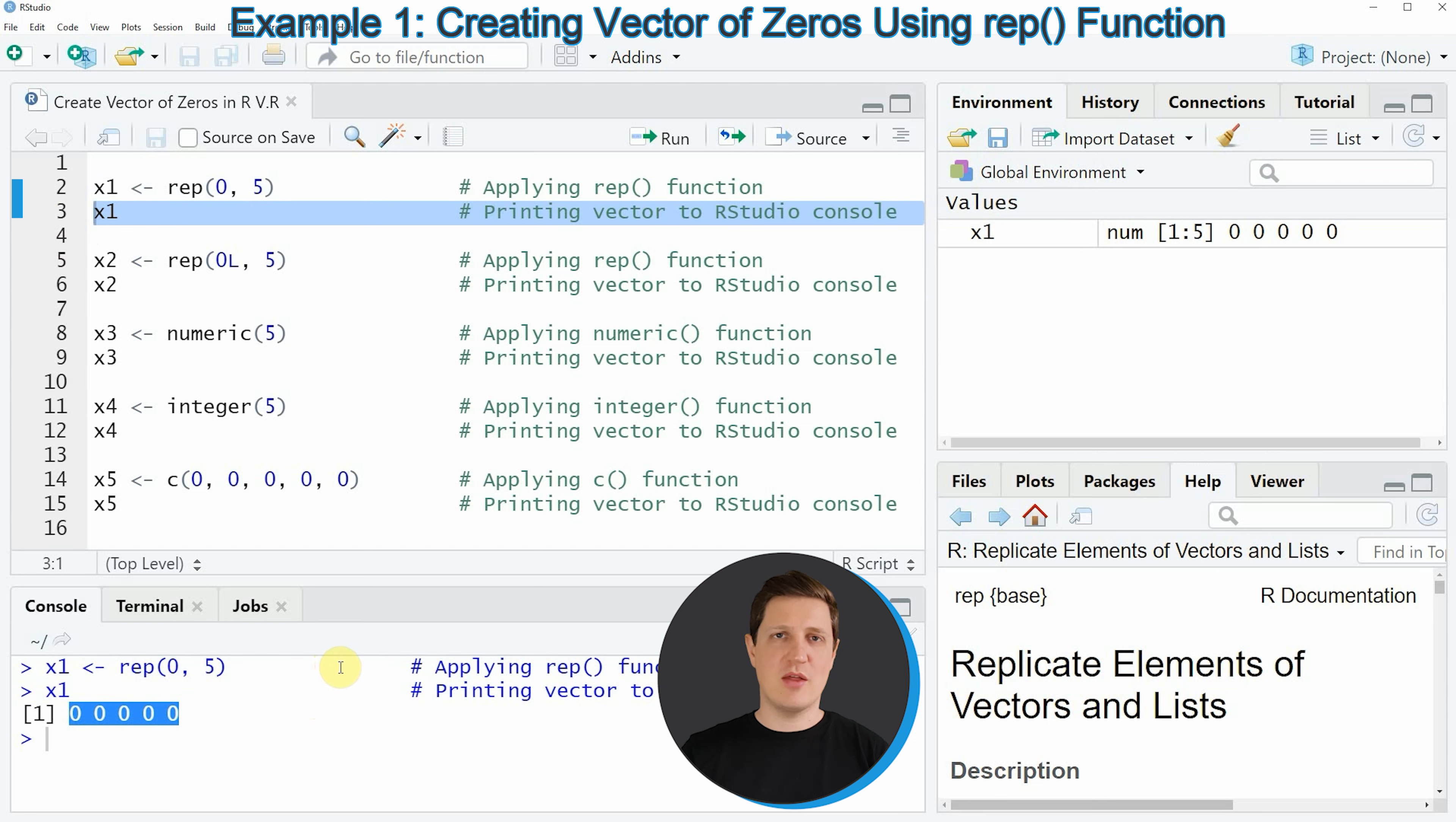This method is my personal favorite, however I want to show you four other examples in which I'm using different codes on how to create a vector of zeros in the R programming language.